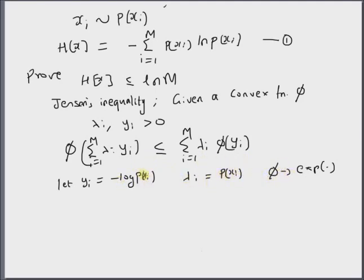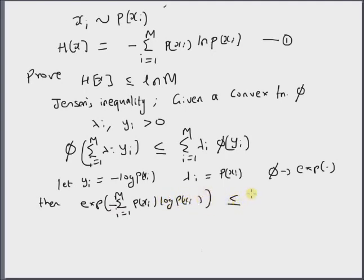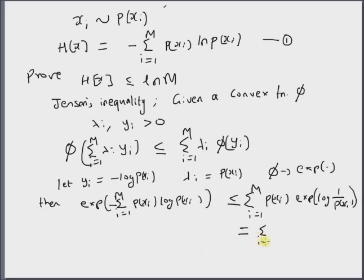Using these variables and functions in Jensen's inequality, we get: exponential of the summation i equal to 1 to m of p of xi times minus log of p of xi, which is less than or equal to the summation i equal to 1 to m of p of xi times the exponential of log of 1 by p of xi. The right-hand side simplifies to summation of p of xi divided by p of xi, which equals m.